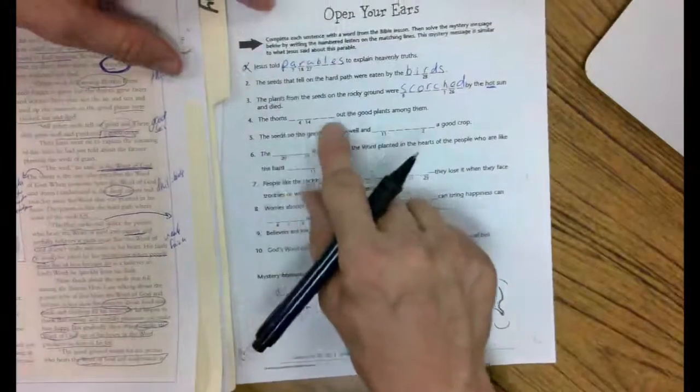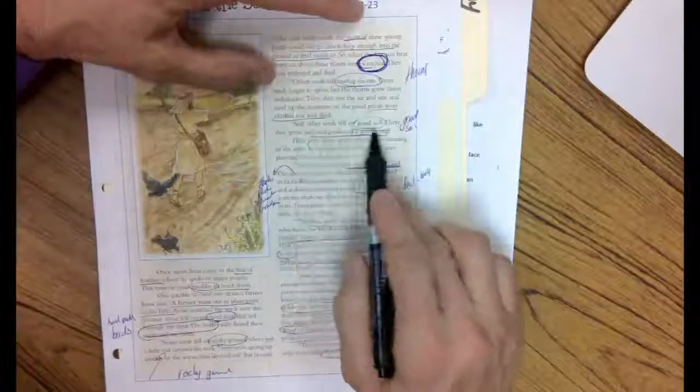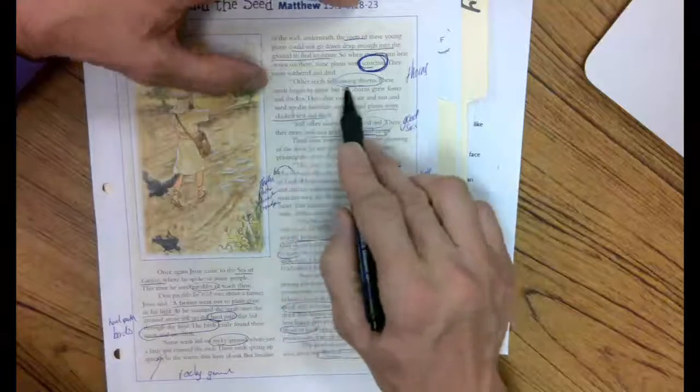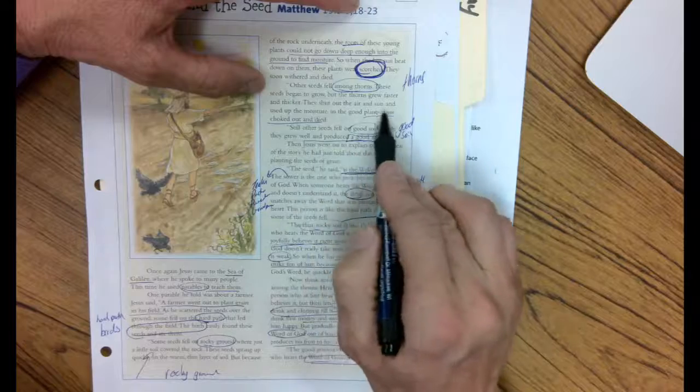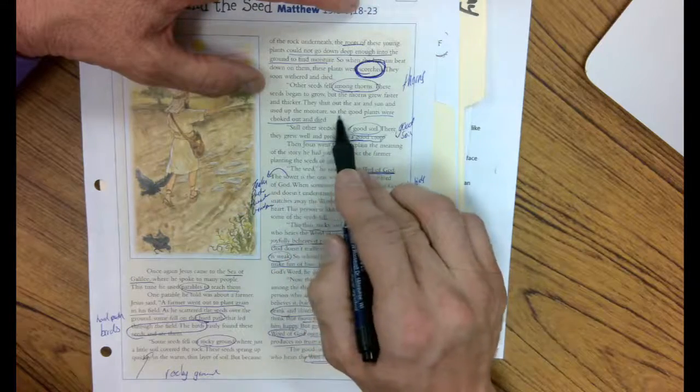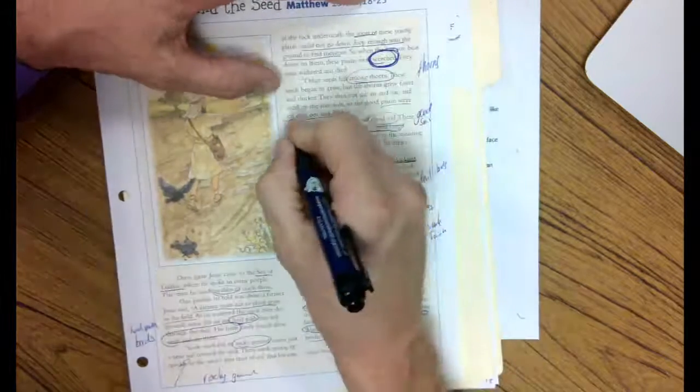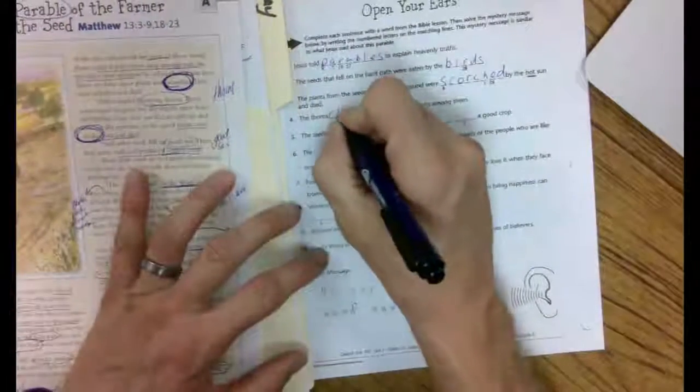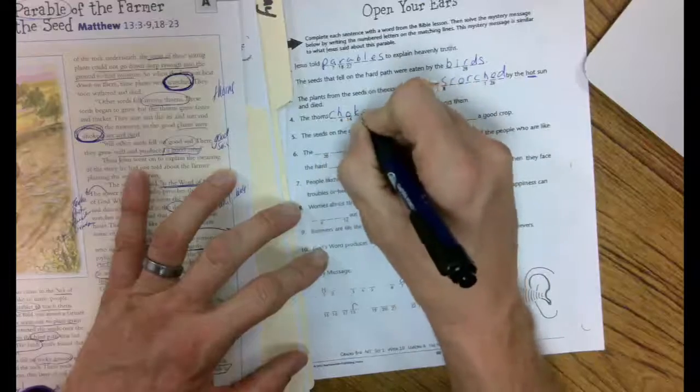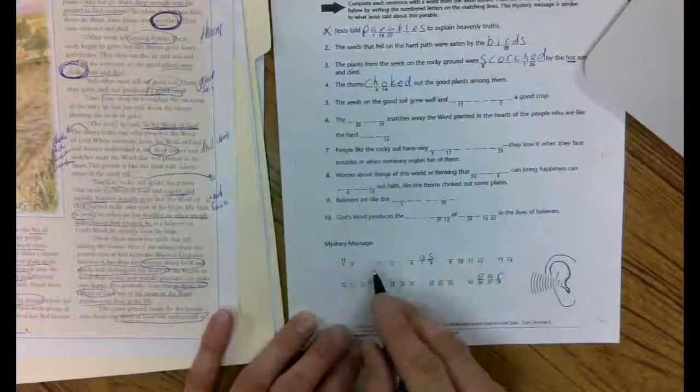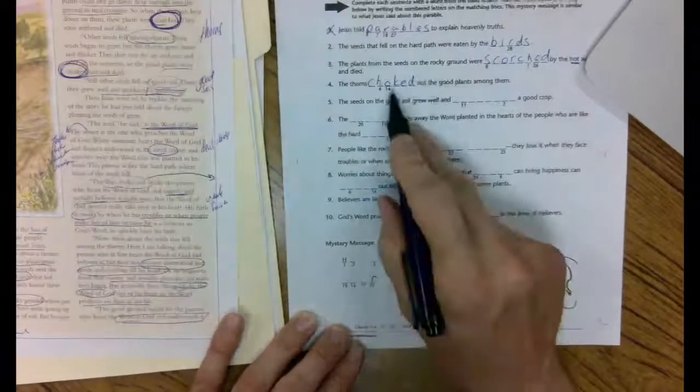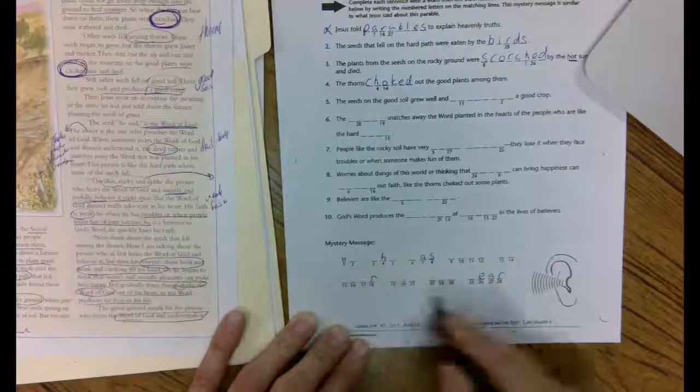The thorns blank out the good plants. Choke. I'm going to see if I can find it here. Still out of this good soil. No, among the seeds fell among the thorns. These seeds began to grow, but the thorns grew faster and thicker. They shut out the air and the sun, used it more. So the good plants were choked. Choked. We got two of them there. We got the H is a four. Four is H. And a 14 is the O.